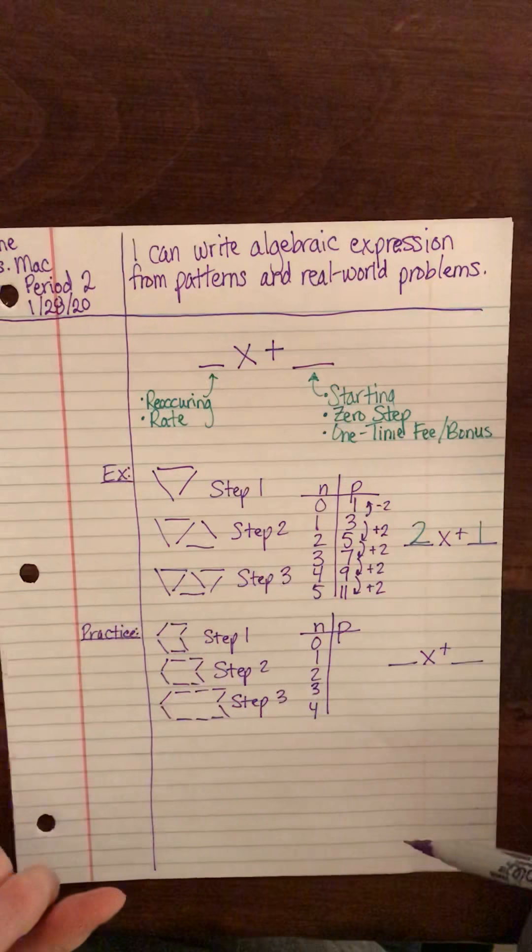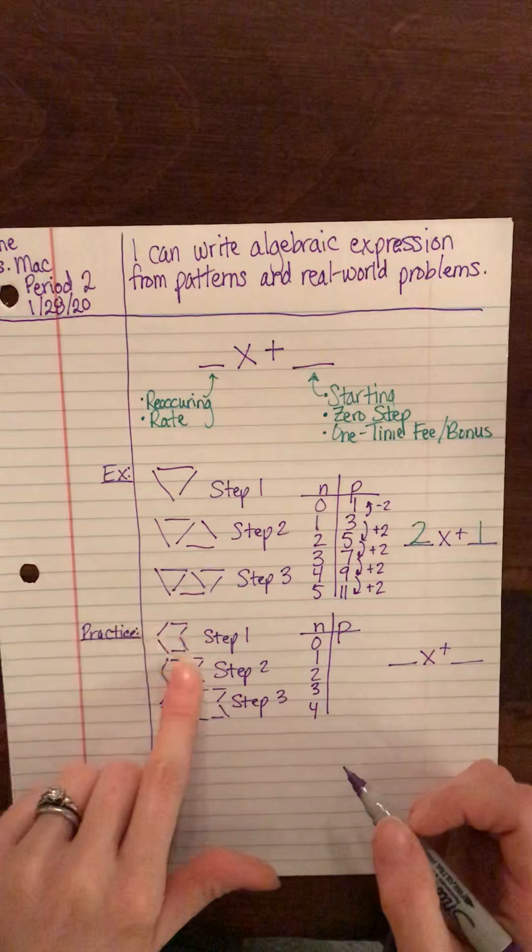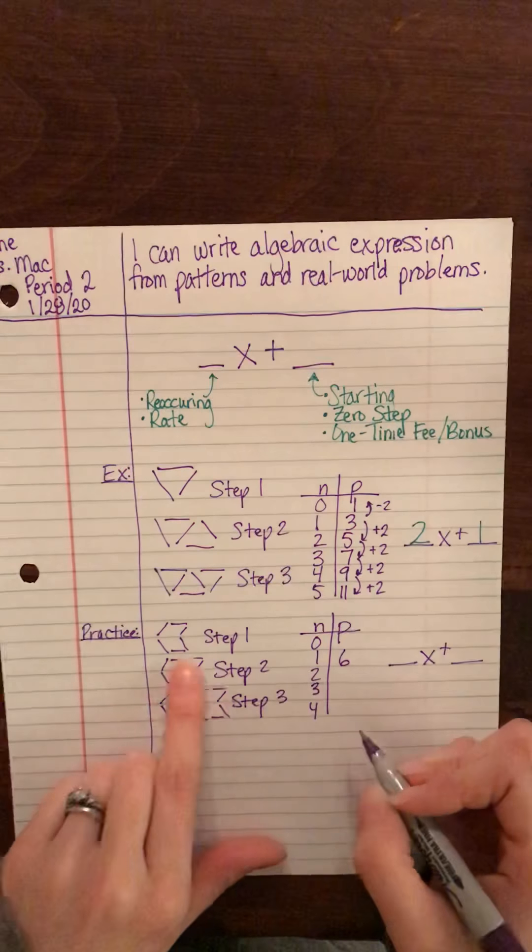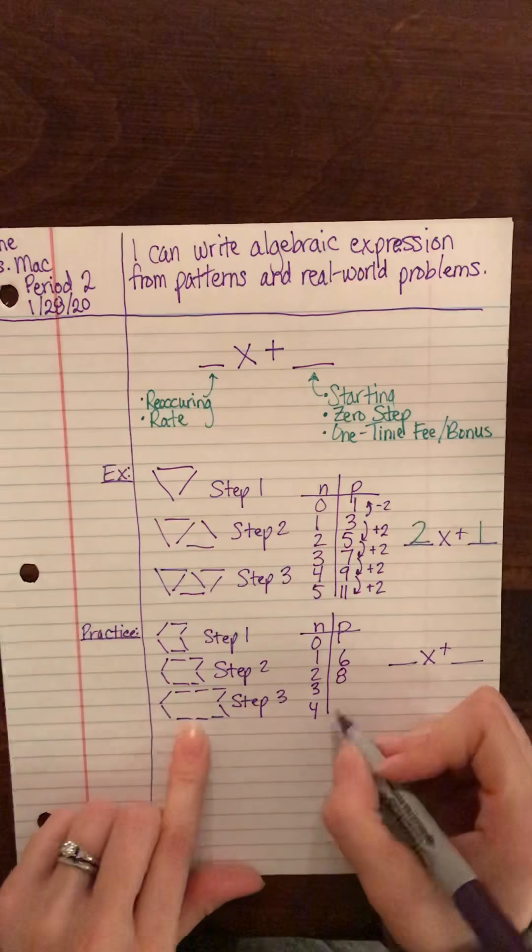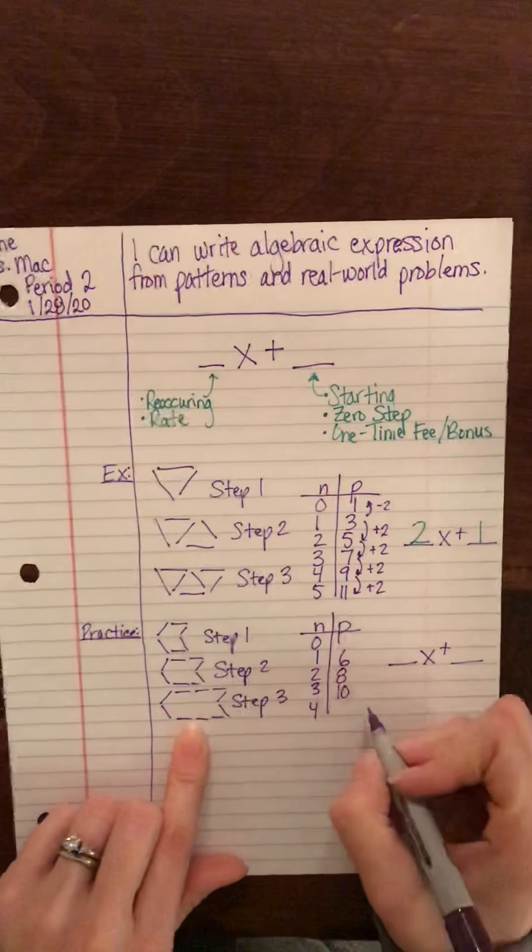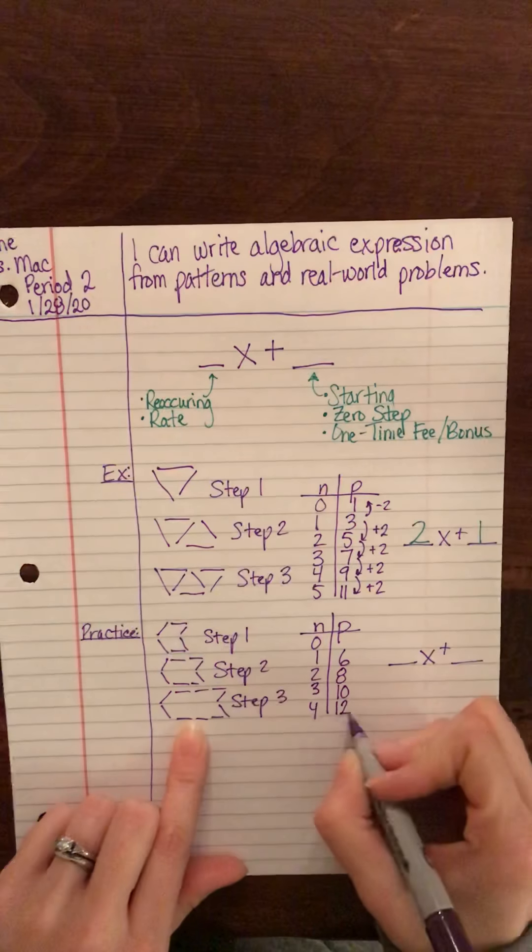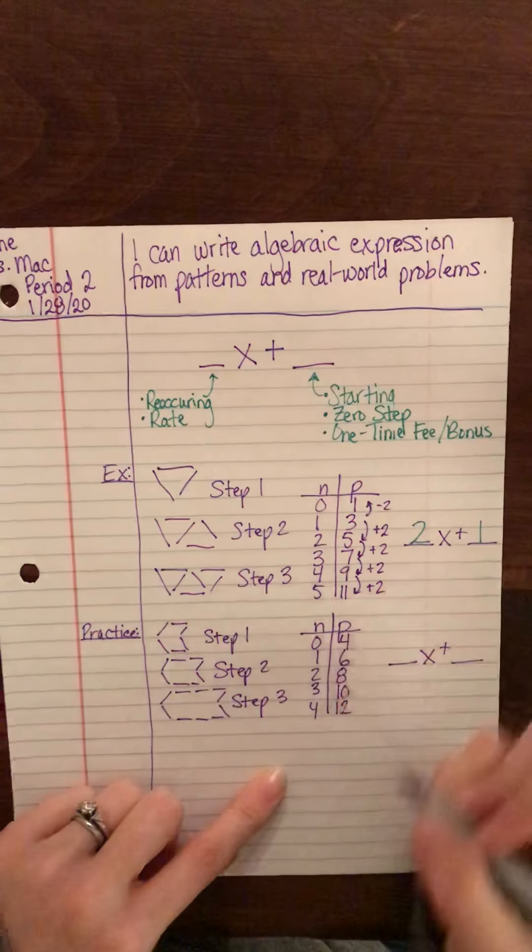All right, let's see how it went for you. On step one I count six toothpicks. On step two I count eight toothpicks. On step three I count ten, which means if we continue on with this pattern, at this fourth step there would be twelve, and in the zero step there were four.